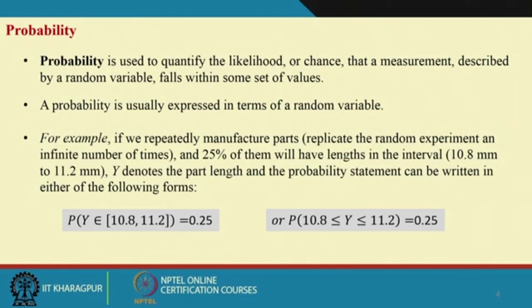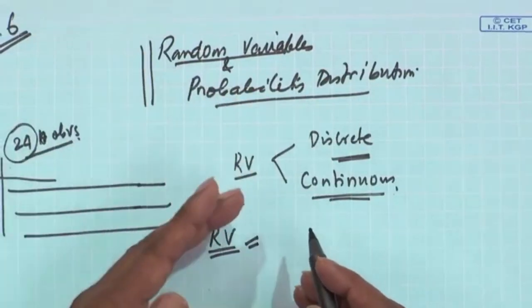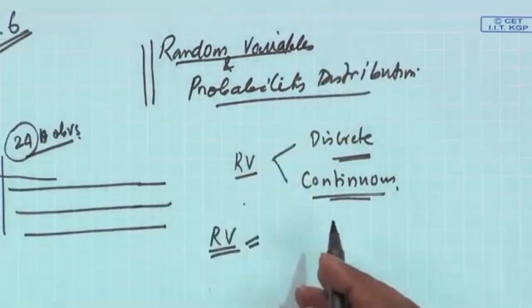A random variable has an interesting characteristic: it takes some value, but in advance you cannot tell what that value is. For example, when you toss a coin you know the outcomes are head or tail, but you cannot say which will occur. Similarly, the intensity range may be 70 to 120 — that is known — but whether the operator will detect at 80 or 90 is not known in advance unless the experiment is conducted.